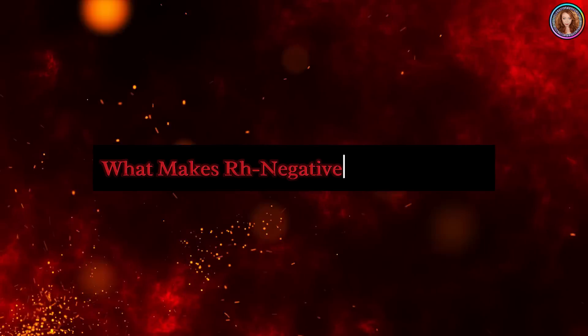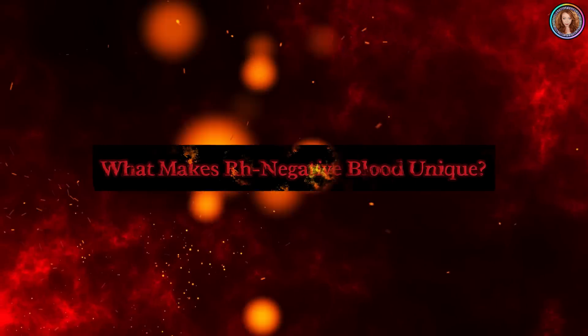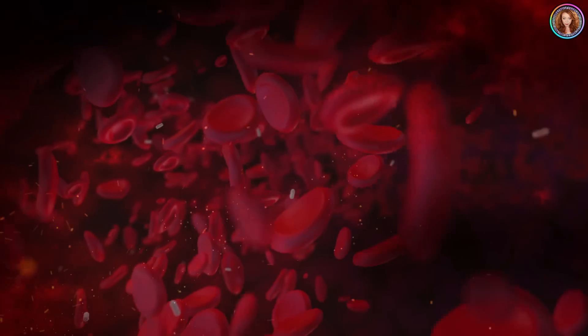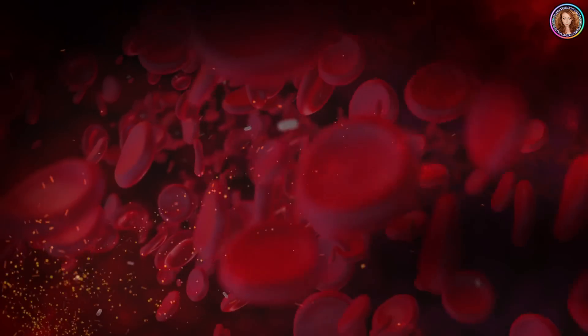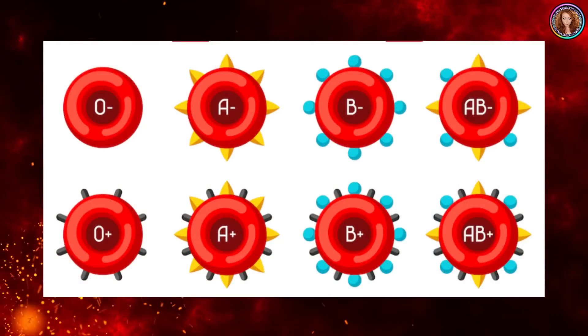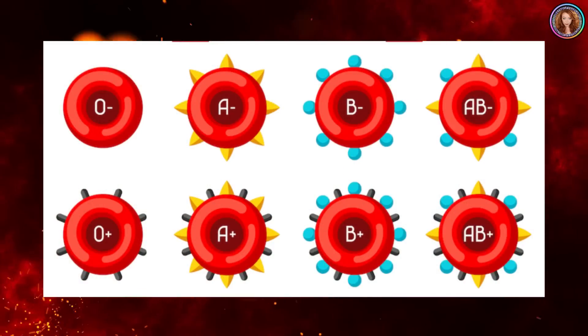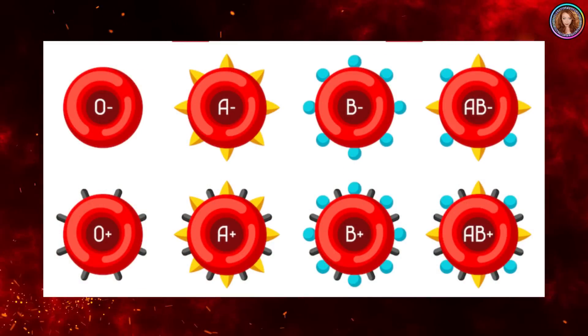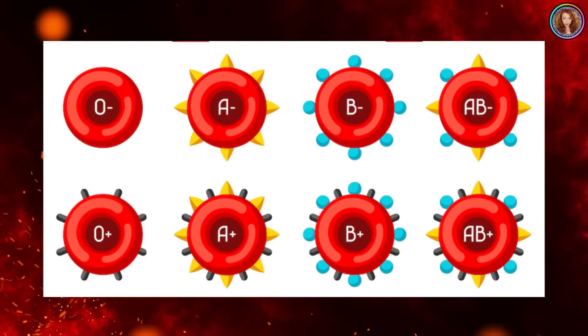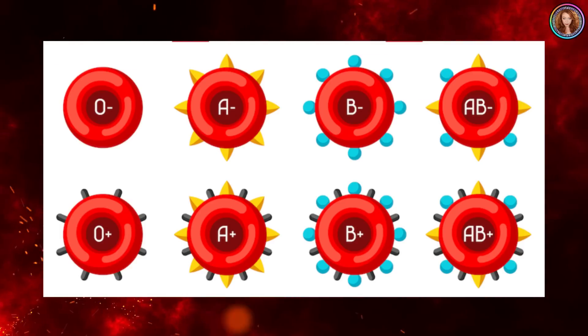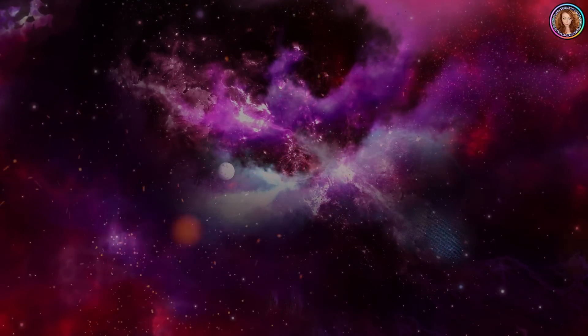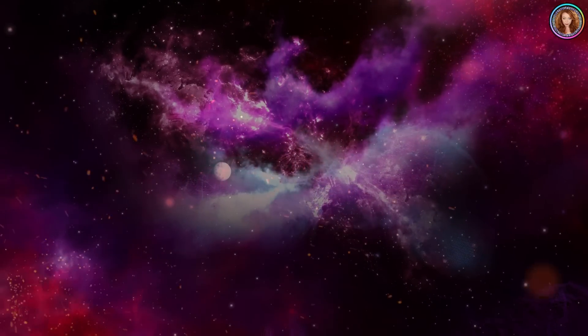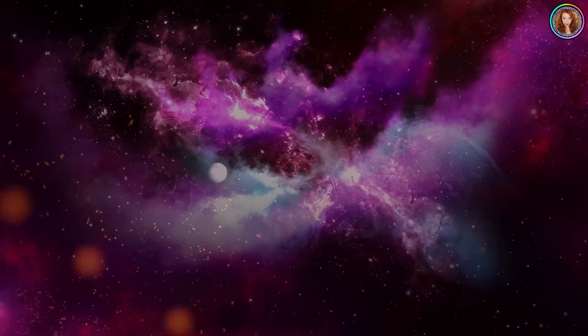What makes Rh negative blood unique? The Rh factor, a protein found on red blood cells, determines whether a person is Rh positive or Rh negative. Those lacking this protein, about 15% of the global population, are classified as Rh negative. This rarity alone has sparked curiosity and speculation about its origins and significance.